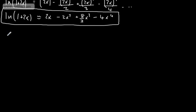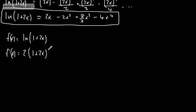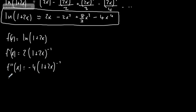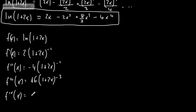Now let's use their method — differentiation. f(x) = ln(1+2x). The derivative f'(x) = 1/(1+2x) · 2, which we write as 2(1+2x)^(−1). The second derivative f''(x) = −4(1+2x)^(−2). The third derivative gives us +16(1+2x)^(−3). And the fourth derivative gives us −96(1+2x)^(−4). All done using repeated applications of the chain rule.